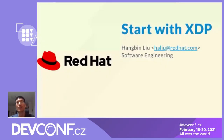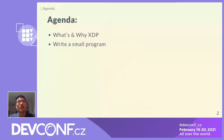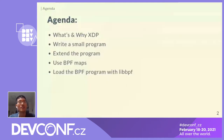I'm Hanbin Liu from Red Hat, working in the network service team. Today we will talk about how to start programming with XDP. Here is the agenda: first we will talk about what and why to use XDP, then we will write a small program, extend it using BPF maps, and finally load the BPF program with XDP loader.